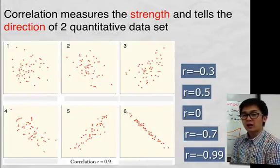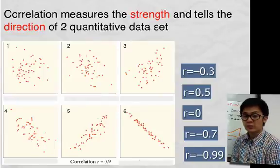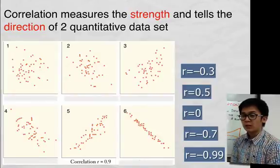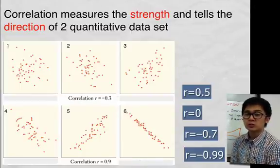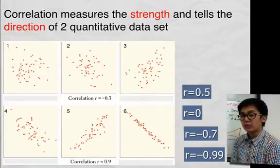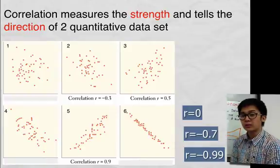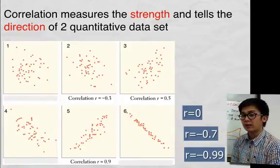If we match R equal to negative 0.3, we have a weak negative relationship. Scatter plot 5 is obviously eliminated, and number 6 is too strong for negative 0.3, so we would choose the second scatter plot. For R equal to 0.5, it's positive but not as strong as 0.9, so we choose graph number 3. For R equal to 0, which means a really weak relationship, it's going to be our first scatter plot.